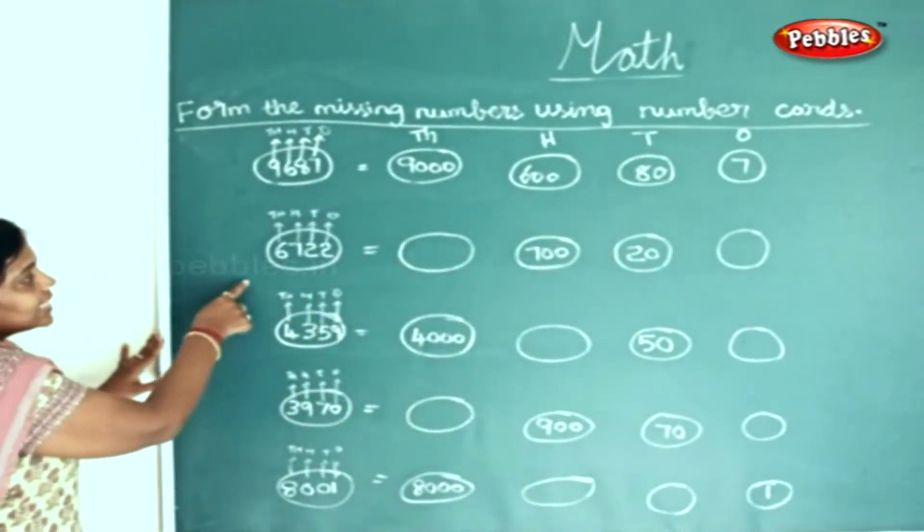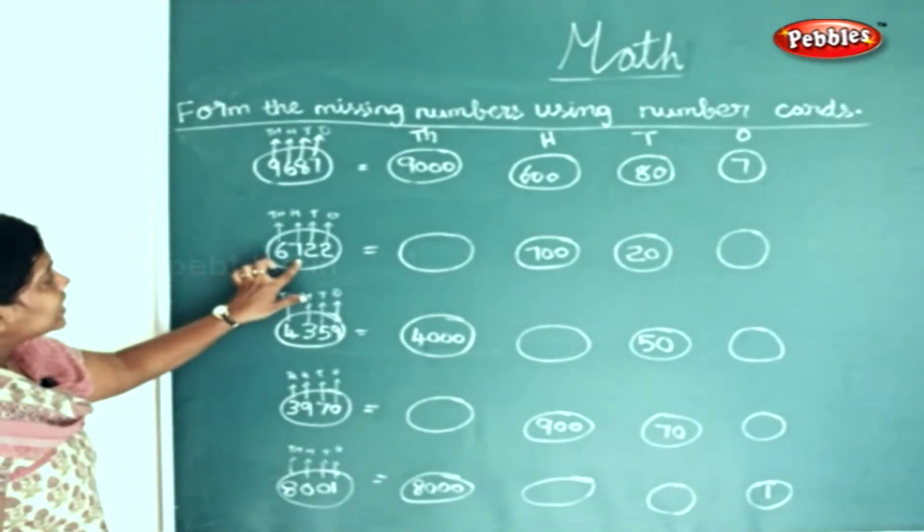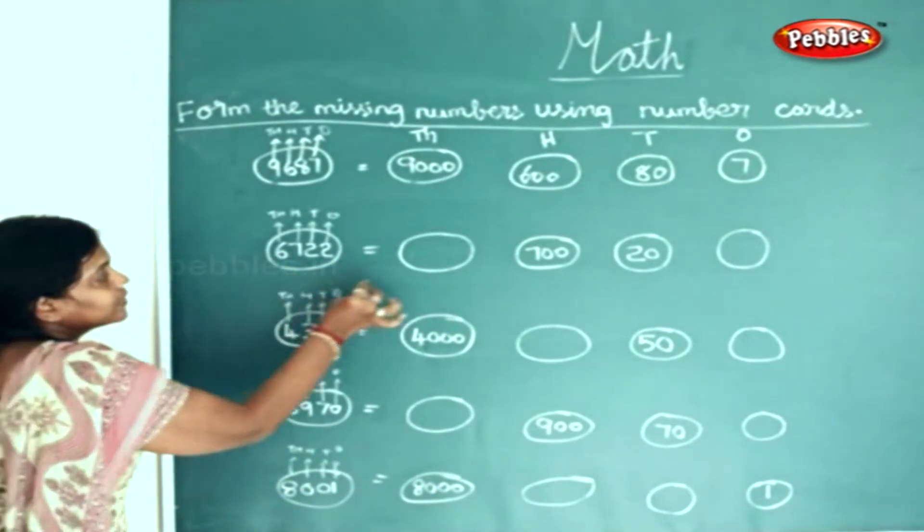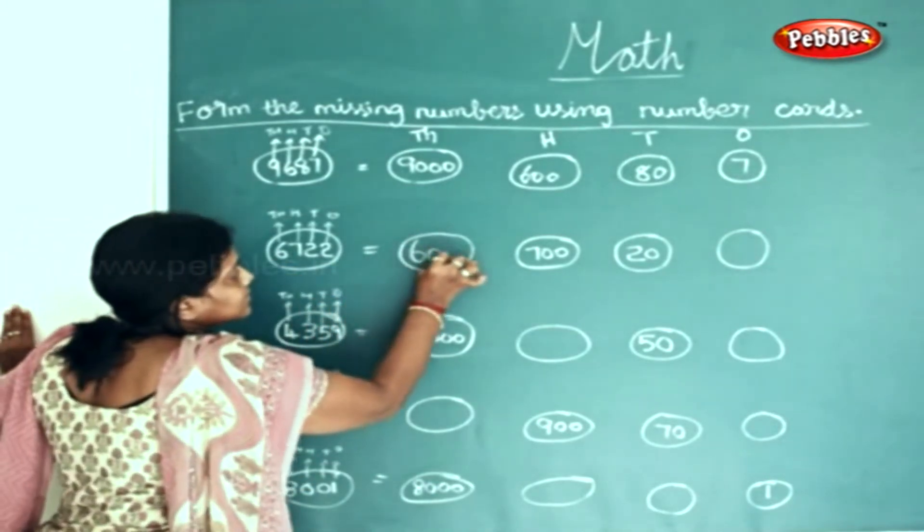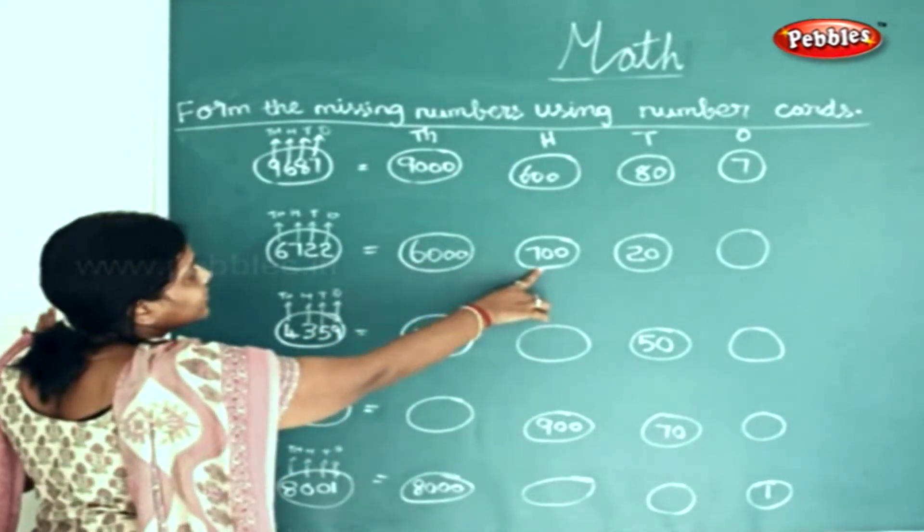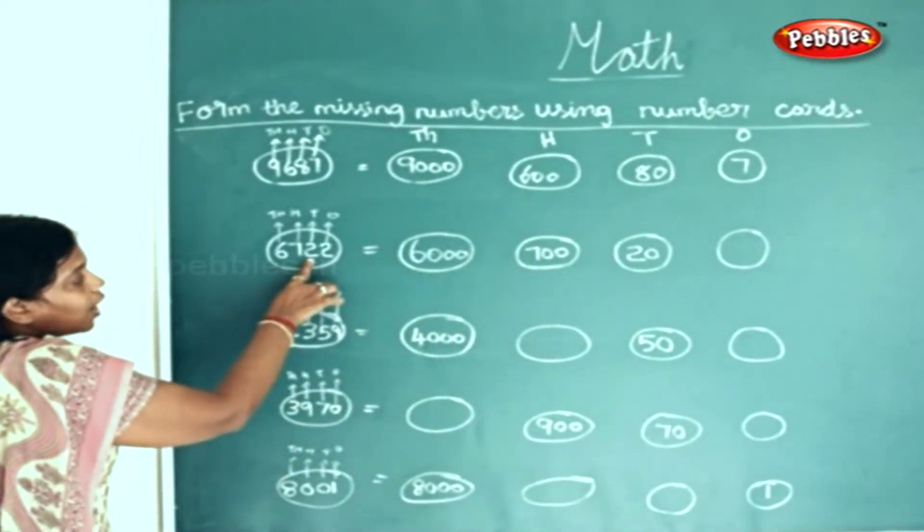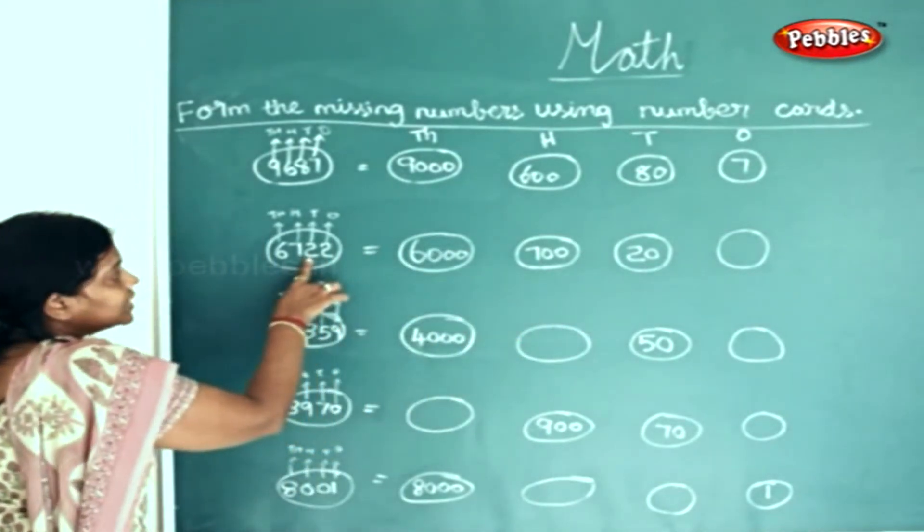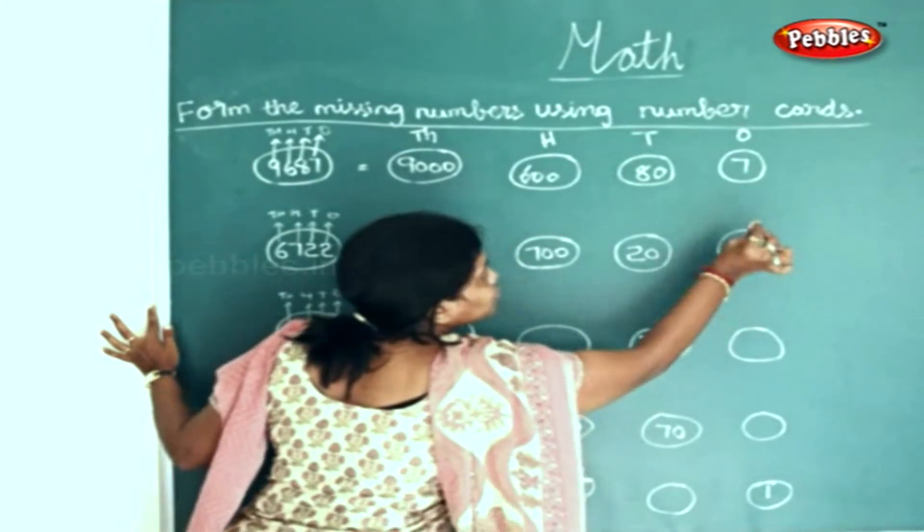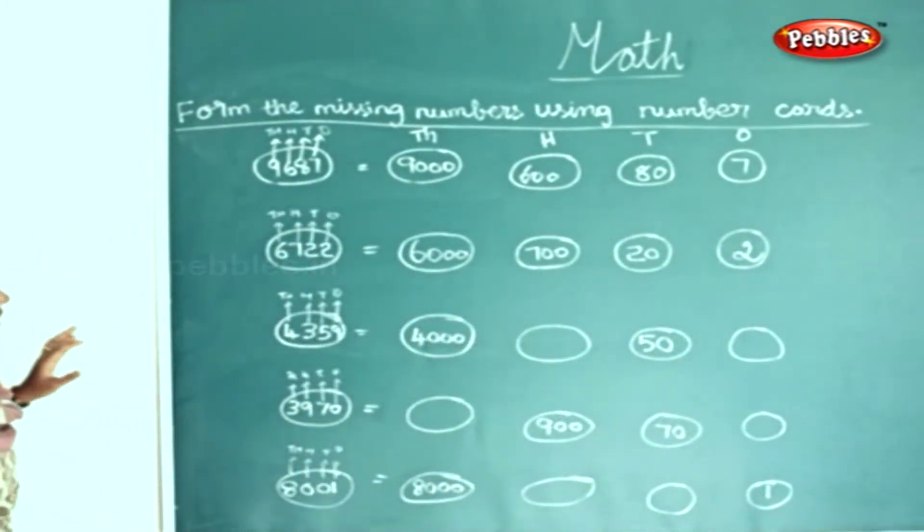Now in the next sum, 6,722. How many thousands here? 6 thousands. How many hundreds? 700, already given to you. How many tens? 20 is already given. How many ones? 2 ones.